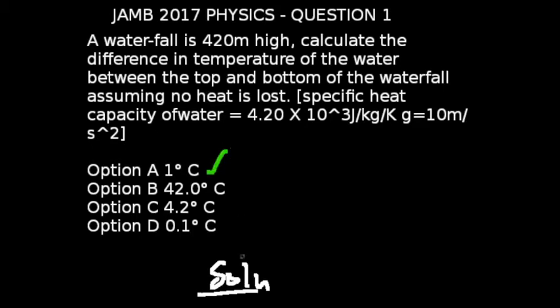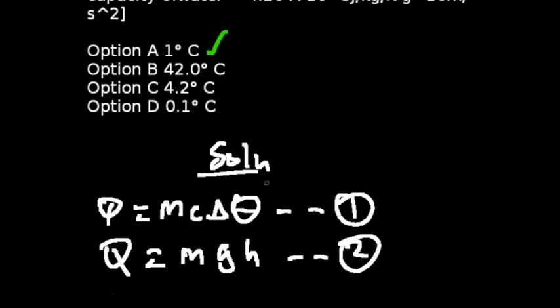In this question, we're going to be using the formula Q, which is the quantity of heat, to be the mass multiplied by the specific heat capacity of water multiplied by the change in temperature.